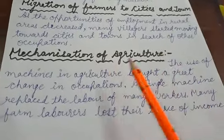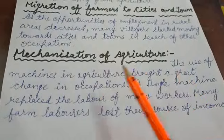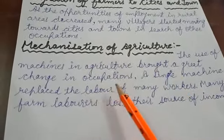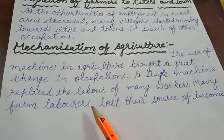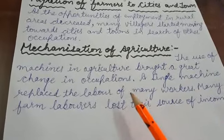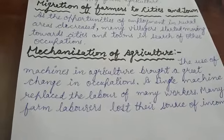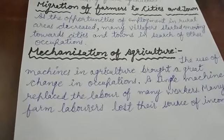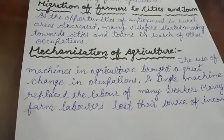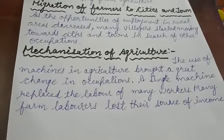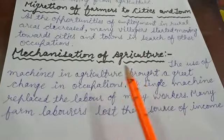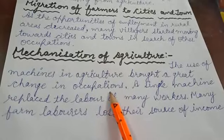Mechanization of agriculture: the use of machines in agriculture brought a great change in occupation. A single machine replaced the labor of many workers, and many farm laborers lost their source of income. However, machines and electricity in villages also created some new occupations like tube well diggers, tractor drivers, salesmen, mechanics, etc.